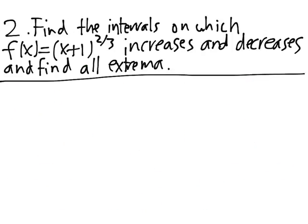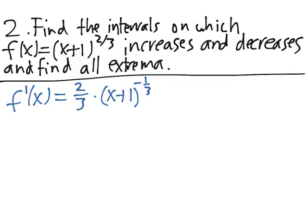Problem 2. Find the intervals on which f(x) = (x+1)^(2/3) increases and decreases, and find all extrema. First, the derivative, f'(x) is equal to 2/3 times (x+1)^(-1/3) times 1. And this is just equal to 2 divided by 3 times the cube root of x+1.